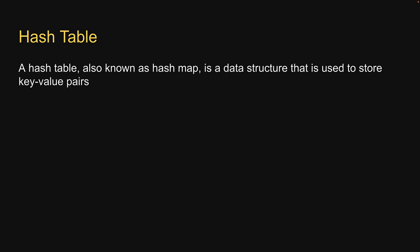A hash table, also known as hash map, is a data structure that is used to store key value pairs. Given a key, you can associate a value with that key for very fast lookup.